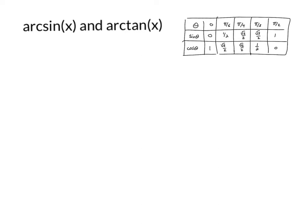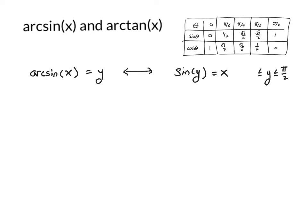The first function, arcsine of x — here is the algebraic definition. We say that if I have the function arcsine and I plug in an input x, I'm going to get some output y. So arcsine of x equals y if and only if sine of y equals x. I'm asking myself: what number do I have to plug into the sine function to get back an output of x? There is one additional restriction: we specifically restrict our answers y to be between negative pi over 2 and positive pi over 2.